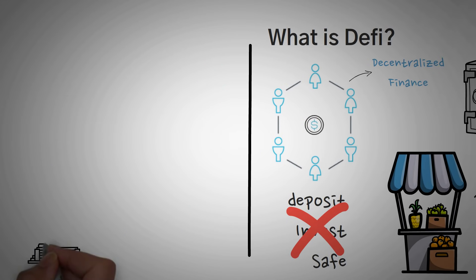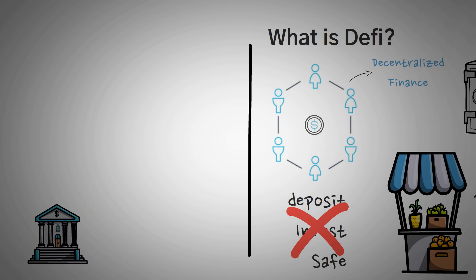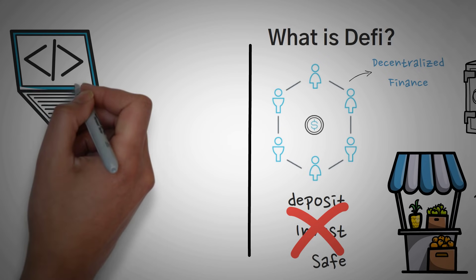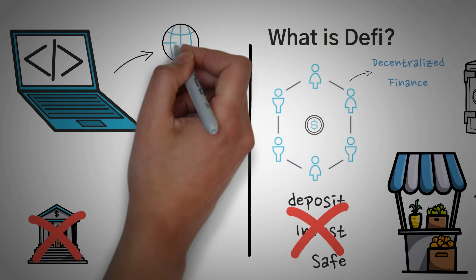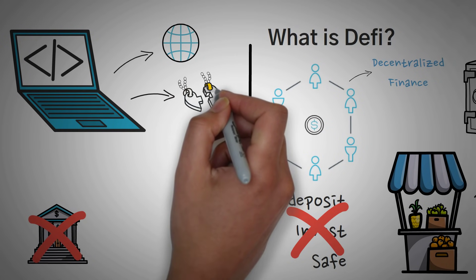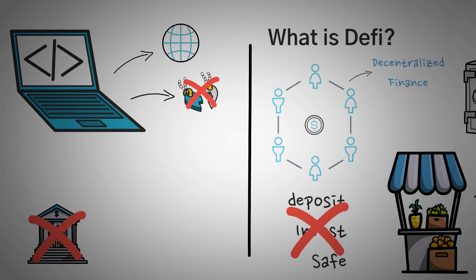The alternative is decentralized finance, where there are no banks. Instead, there are pieces of code that run and act as a bank. They're open to anyone. They don't require you to trust them, because they're literally a piece of code running a program.